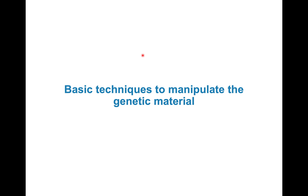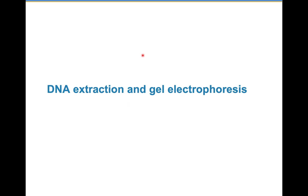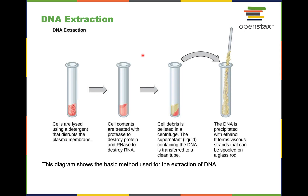So basic techniques to manipulate genetic material — we're going to be talking about a few of them. We're going to start talking about how we get DNA out of an organism, and how we characterize the DNA using a technique called gel electrophoresis. So how do you get DNA?